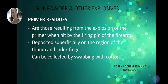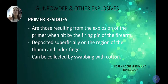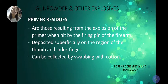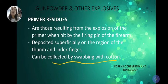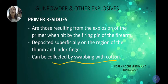These residues can be collected by swabbing with cotton. Swabbing is used to examine firearms for the presence of gunpowder residue, since it is believed that deposits form on the firearm after firing. However, if a suspect has already cleaned the firearm, the chances of collecting gunpowder or primer residues are very minimal.